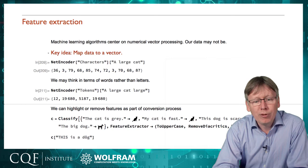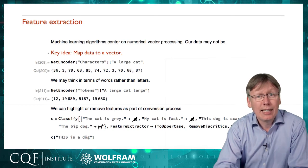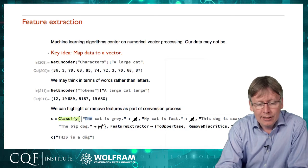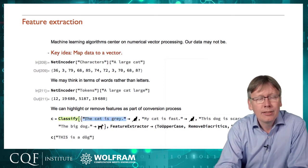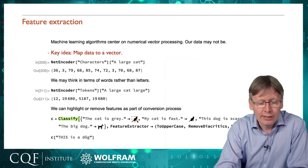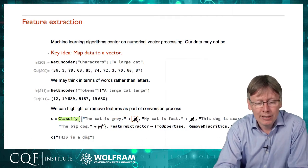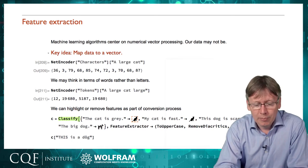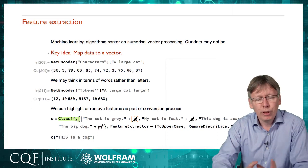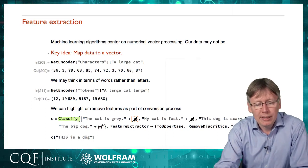One of the things we can do through that process by tweaking it is magnify or diminish features. I've got some data here that is trying to predict whether text is talking about a cat or a dog. The input is some text like 'the cat is grey', the output is a picture of a cat, and so on. We've got some different bits of input.